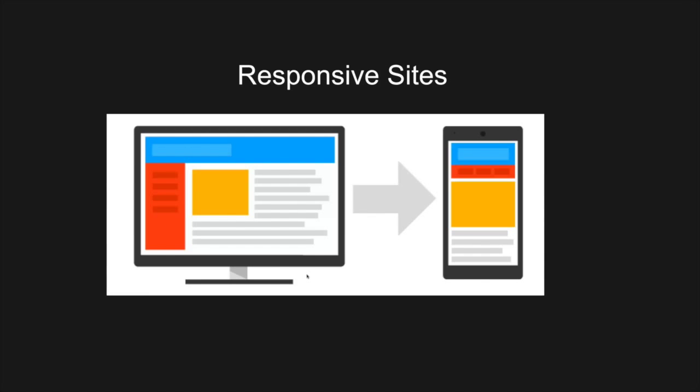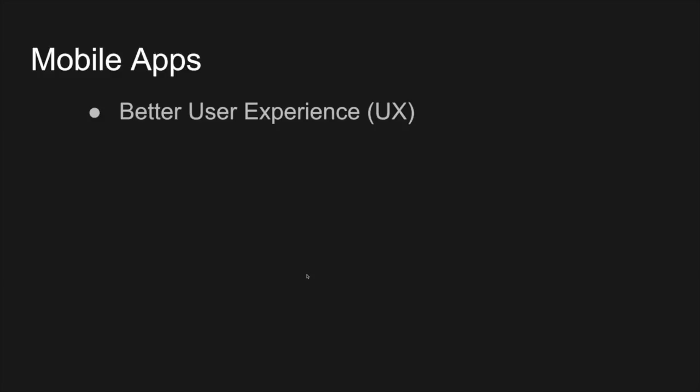Responsive sites rearrange elements of a web page depending on browser size — that's what makes a site mobile friendly. That's by far the cheapest, most cost-effective way to have a mobile presence. But mobile apps actually give you a better user experience. They are more niche and more specific. Every app you have on your phone is specific to even the device it's on. Think about what characteristics your phone has without an internet connection: a great camera, a great speaker, keyboard accessibility.